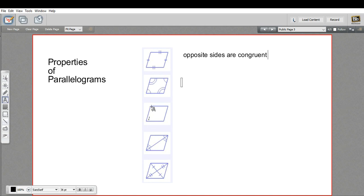The way the angles work inside a parallelogram is that angles that are opposite from each other, so they're diagonally across from each other, they're congruent as well. So opposite angles are congruent.